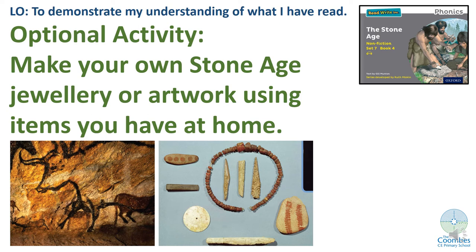Today you also have an optional activity — you don't have to do this one, it's just there if you would like to. Your optional activity is to make your own Stone Age jewellery or artwork using items you have at home. We won't have animal teeth lying around to make jewellery with, but maybe you could make a Stone Age necklace out of pasta and paint it with all of the colours that they used.